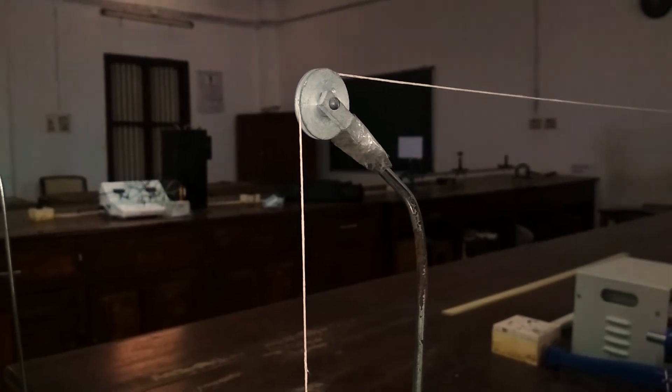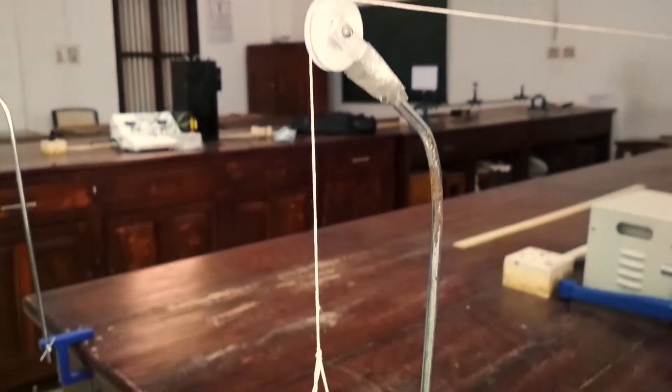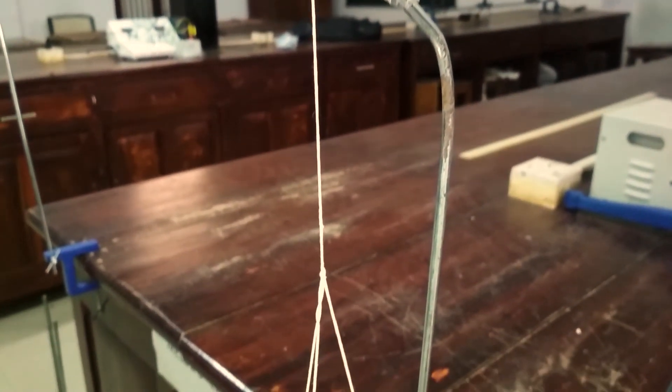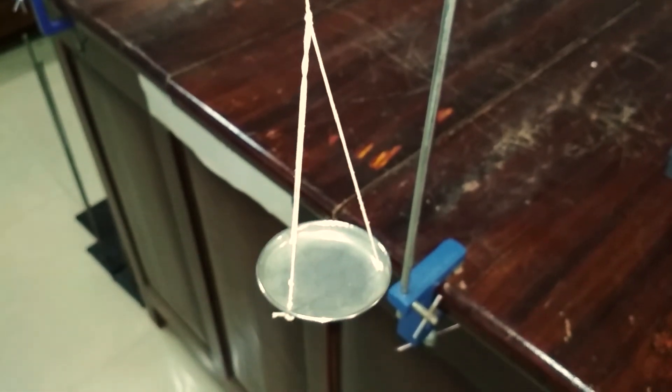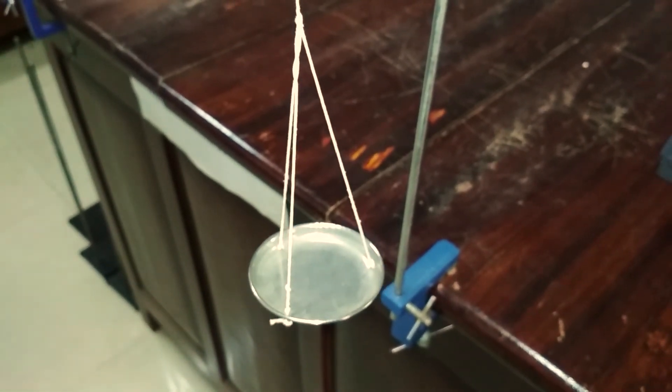A lightweight string is connected to the tuning fork and the other end is passed through a stand with a clamp and pulley. To find the mass per unit length of the string, an additional 10 meters of sample string and an analytical balance will be provided.